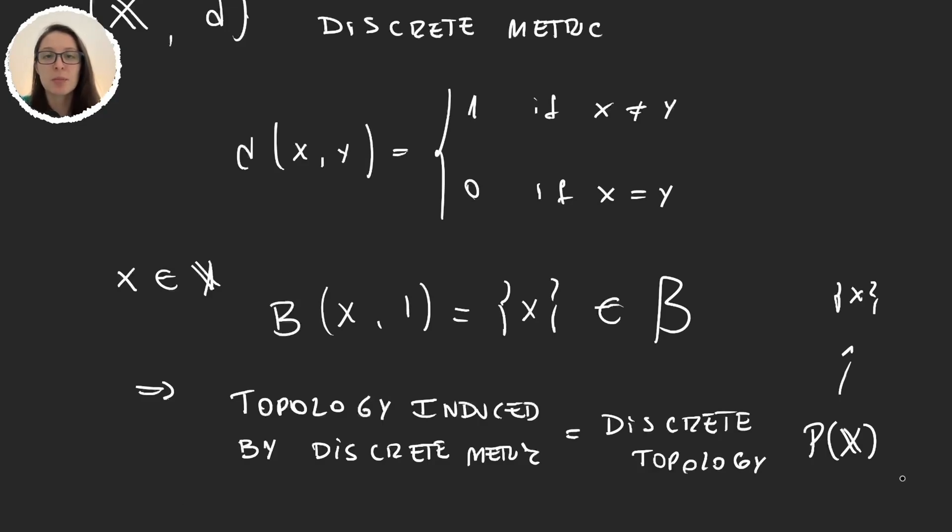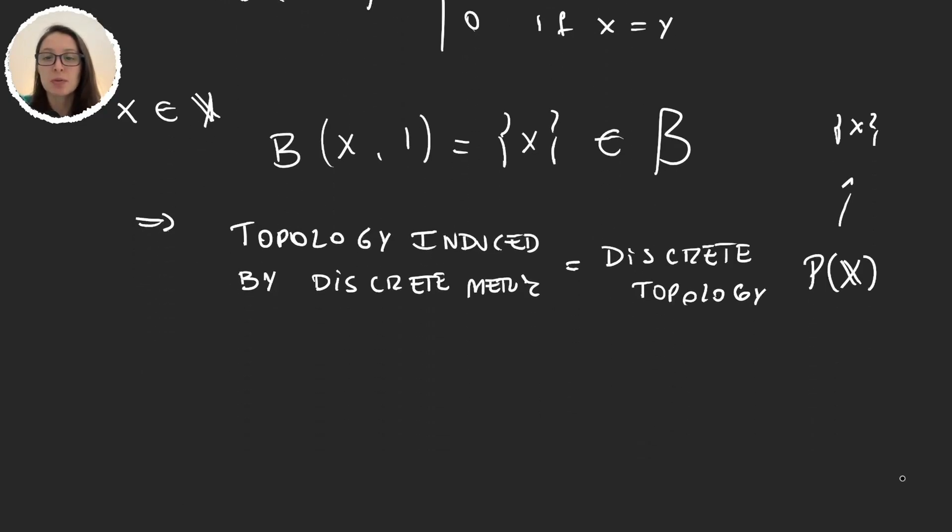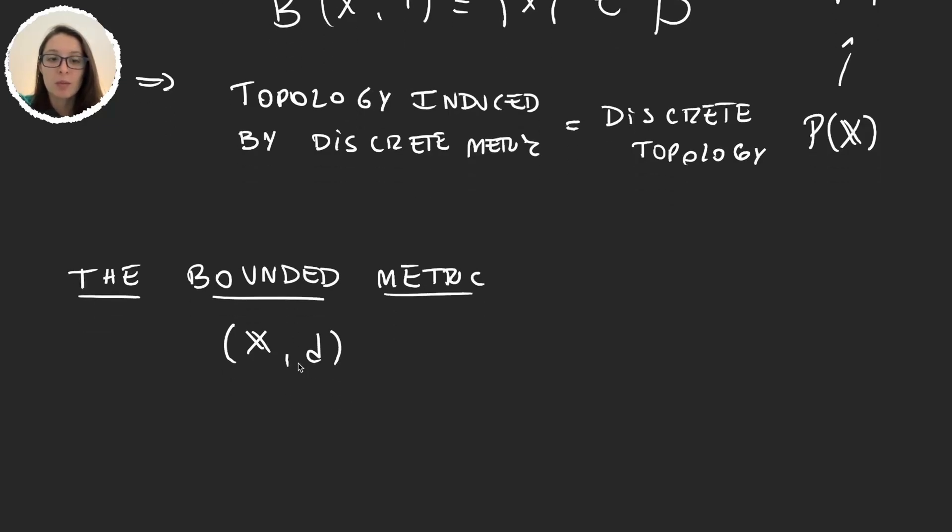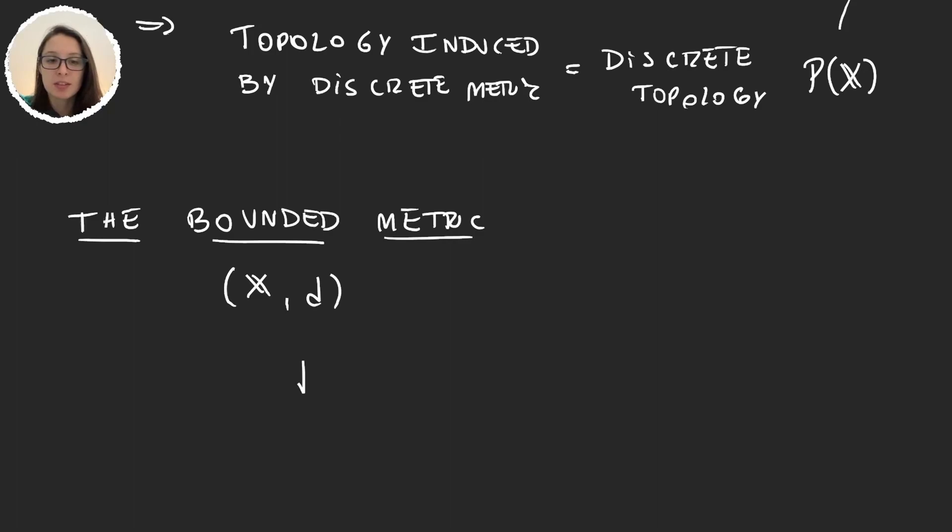Now let's see a particular metric that will be very useful for us later on. This metric is called the bounded metric. And to define it let's suppose we have a metric space (X,d). We will define a new metric d-bar given two elements of our set x and y. This is going to be defined as the minimum between the distance with our original metric in the space between these two elements and 1.